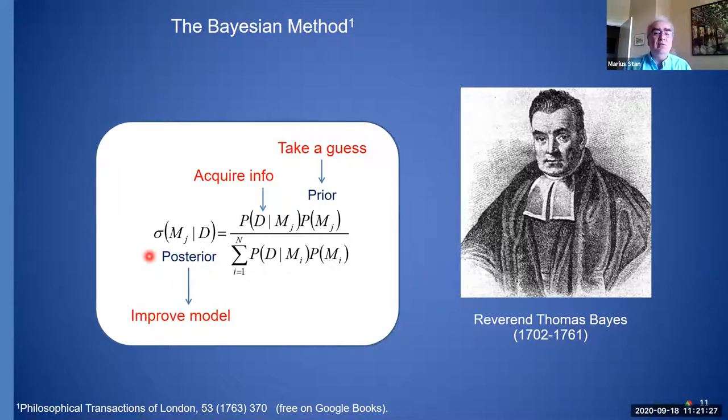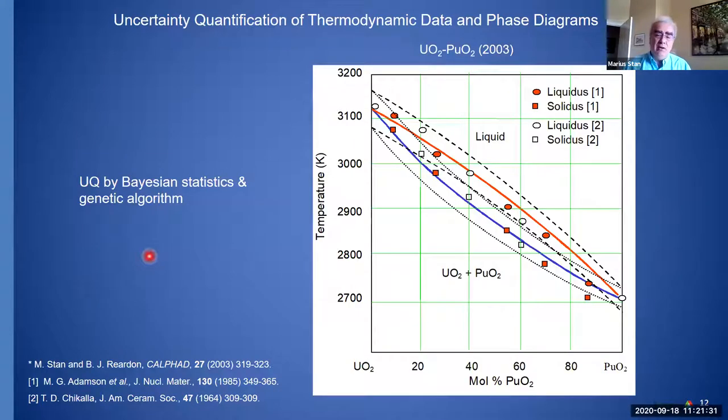We were lucky to now not only calculate diagrams or any other material property, but also add uncertainty to those properties. This is a very simple diagram, uranium oxide, plutonium oxide. You have the liquid above, the solid solution on the lower part. But then if we look at more than 20 data sets using Bayesian statistics and a genetic algorithm, we were able to get uncertainty evaluation, confidence intervals for both these lines.